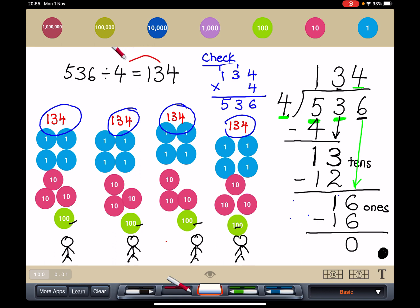Now, let's see. Have I gotten back, if I check my multiplication, have I gotten back 536? Yes, I have. So that tells me that my answer, each person gets 134, is correct.